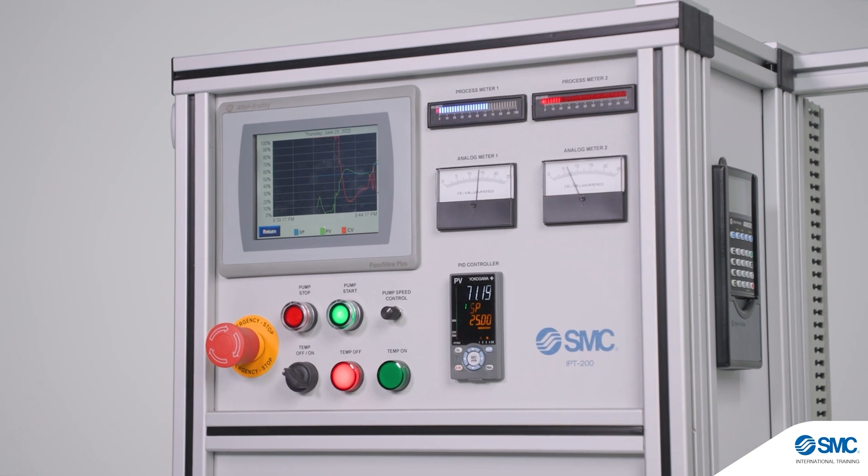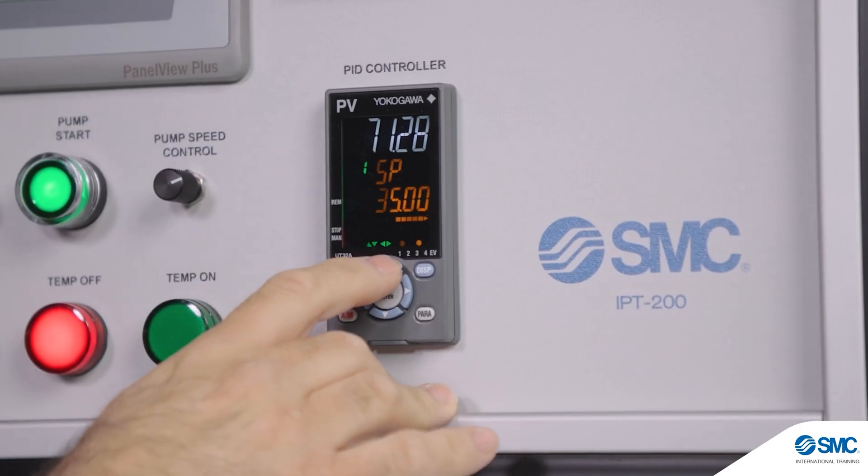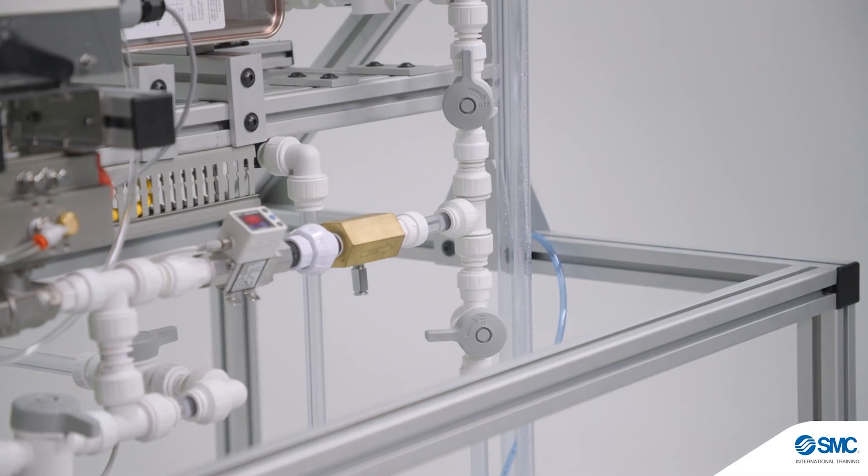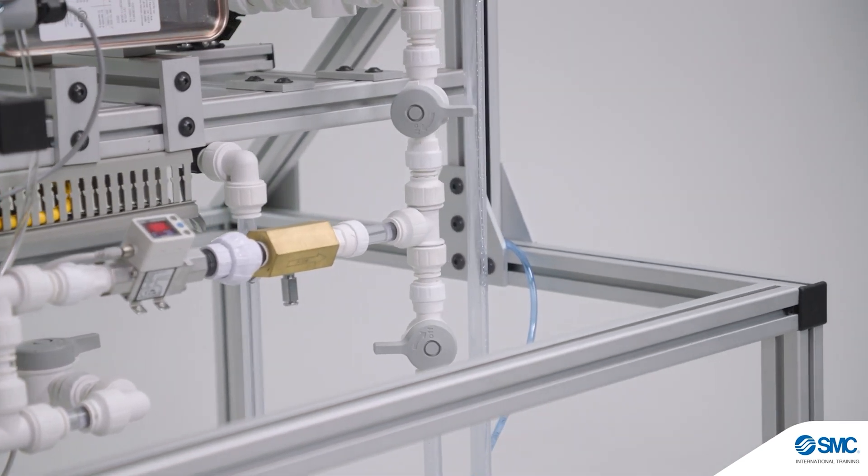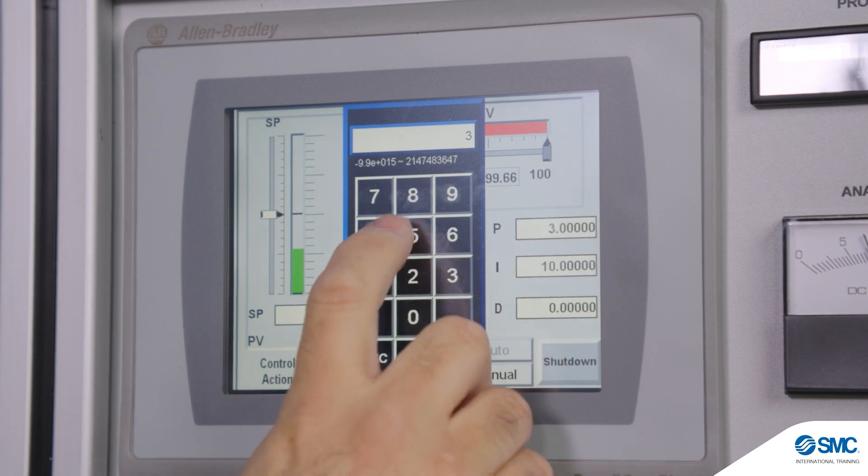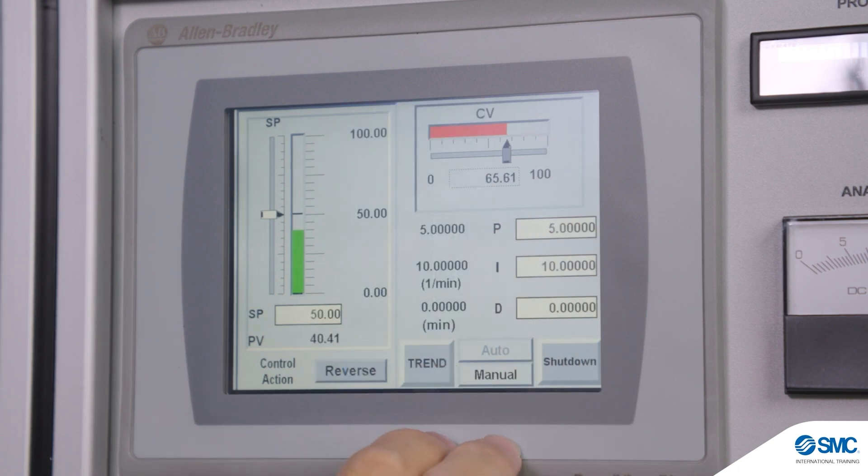The IPT200 includes a standard industrial PID controller with a software interface. It uses standard industrial transmitters and valves for control of variables. It can be expanded to include any brand PLC and HMI functionality.